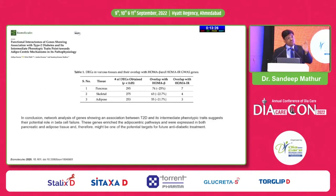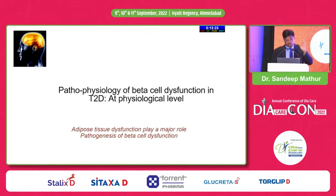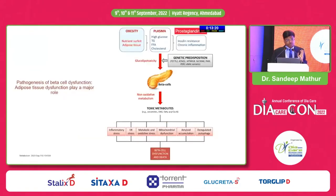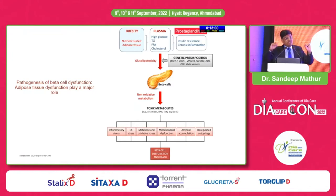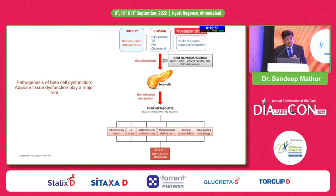Remember: beta cell dysfunction is nothing but adipose tissue dysfunction — a mirror image. At the physiologic level, it is basically free fatty acids and glucose that are the detrimental molecules for beta cell damage. All your strategies should be directed at not only glucose but free fatty acids also. Inflammatory mediators also damage your beta cells. The beta cell's final dysfunction pathway includes inflammation, endoplasmic reticulum stress, metabolic oxidative stress, mitochondrial dysfunction, and amyloid deposition.